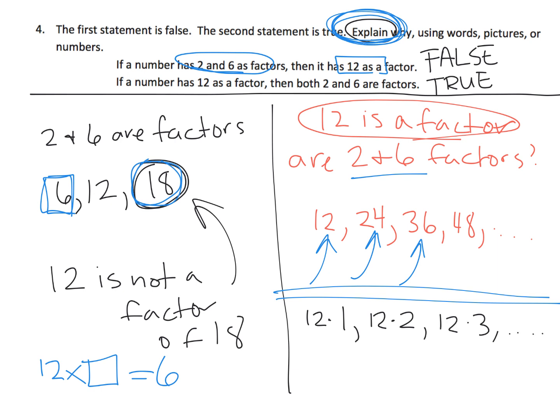And we know that 12 is always going to be a factor because it's always one of the factors here. It's 12 times 1, 12 times 2, 12 times 3. So, 12 is always going to be a factor.